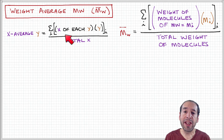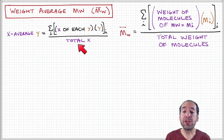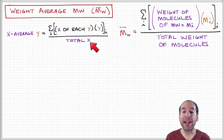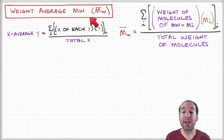The weight average molecular weight is another parameter used to characterize chain length in polymer systems. Let's look at how we would calculate this using the general rule where the x-average of y is equal to the sum over the distribution of the product of x of each y times y, divided by the total x. In this framework, weight corresponds to x and molecular weight corresponds to y.